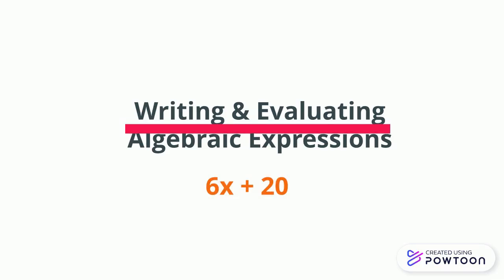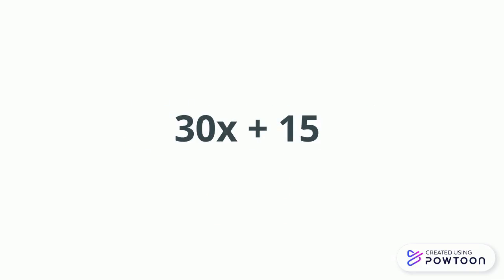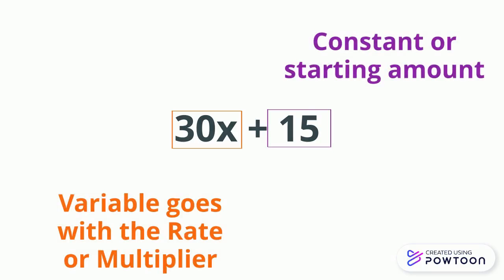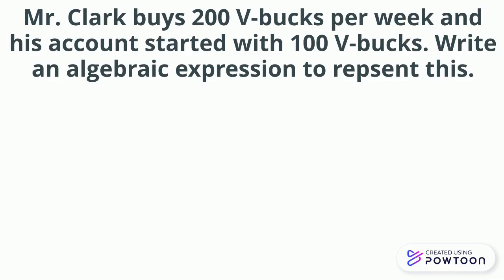When we talk about writing and evaluating algebraic expressions, we first write an algebraic expression, then to evaluate it we substitute a value in for the variable and figure out what the expression equals. In real-life situations, the part that goes with the variable is almost always the rate or multiplier, and the part without a variable is called the constant — it usually represents a starting or given amount.